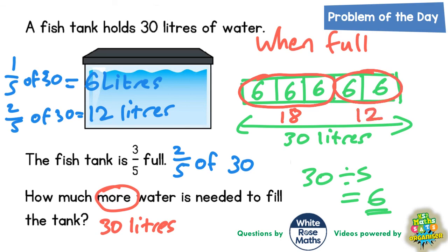To make it up to 30, because 18 plus 12 is equal to the 30 that we've got there. That's another way that we could get the answer of 12. Either way, the answer must be 12. We need another 12 liters to fill the tank if there's already three fifths in there.